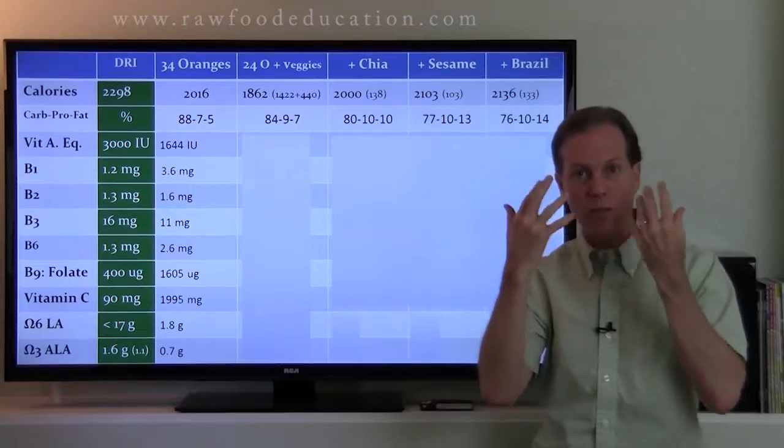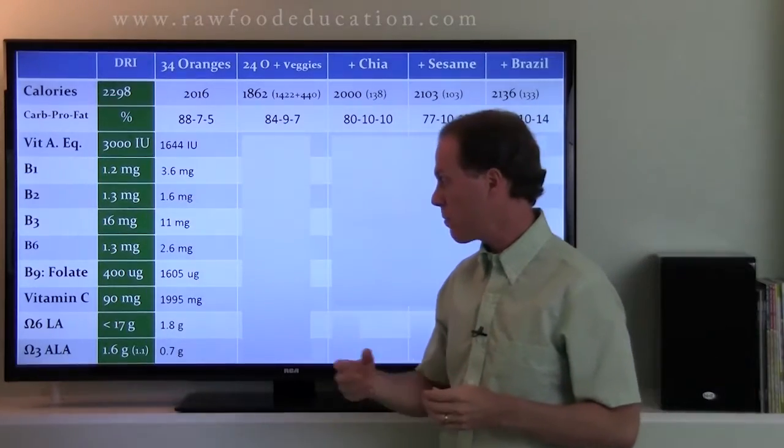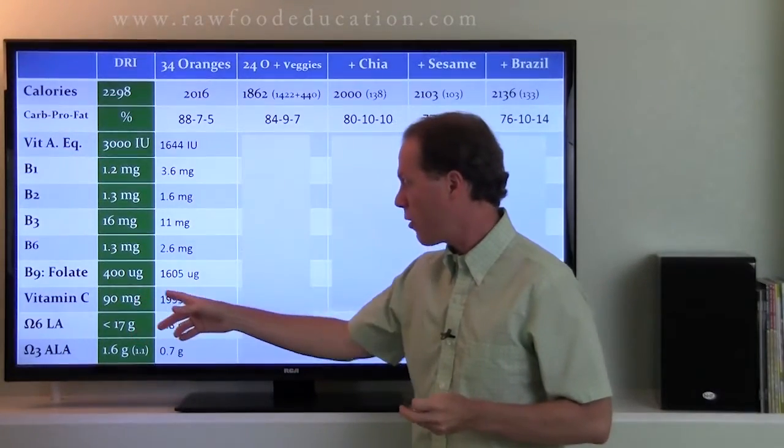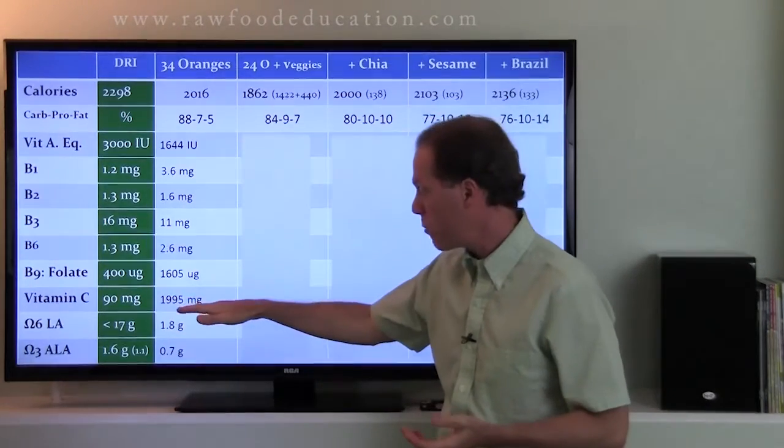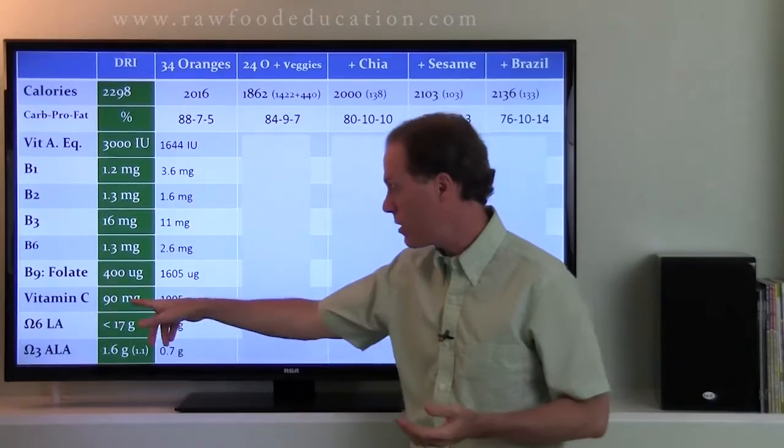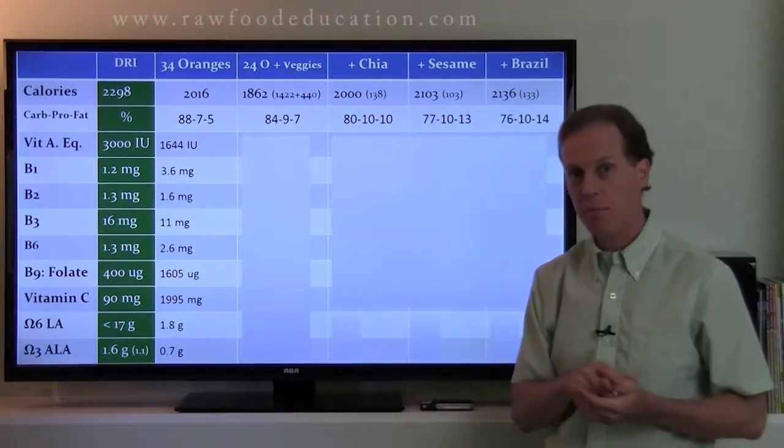You need vitamin C to help collagen have a good structure. Without enough, they start to break down and bleed. So the thing is, we've got over 20 times more vitamin C than that. This is more of an optimum range, whereas this just prevents deficiency.